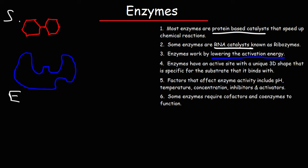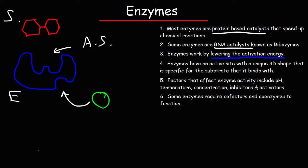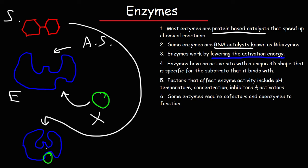A non-competitive inhibitor, also called an allosteric inhibitor, binds to the allosteric site of the enzyme — somewhere away from the active site (AS). Once the non-competitive inhibitor bonds to that site, the enzyme changes shape such that it no longer fits with the substrate. So the substrate can't bond with the enzyme, and that's how a non-competitive inhibitor decreases enzyme activity.